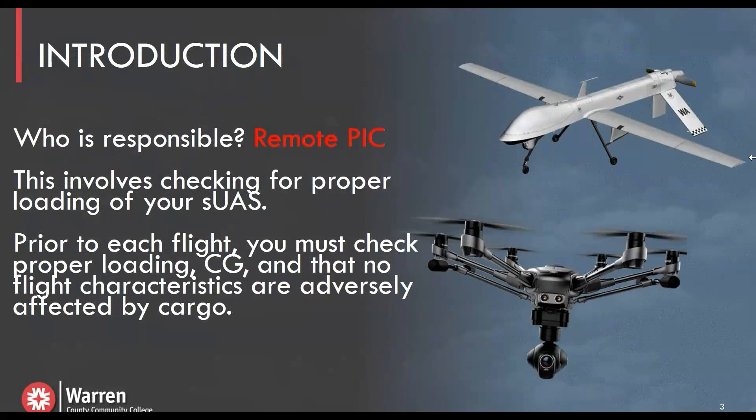The first thing to realize with Part 107 is who is responsible. This is a question you're going to see a lot on your Part 107 test, and the answer is almost always the remote pilot in command. Who's responsible? Remote pilot in command. Something went wrong? Remote pilot in command. If you see the words 'who's responsible,' you can almost always pick the remote pilot in command — but still take your time and read all the test questions.